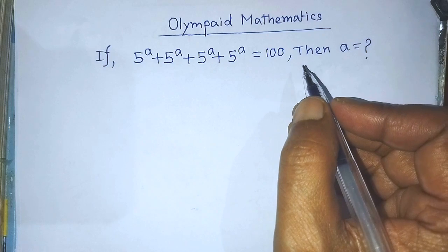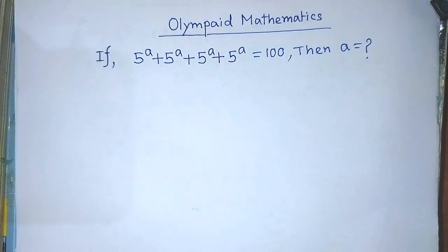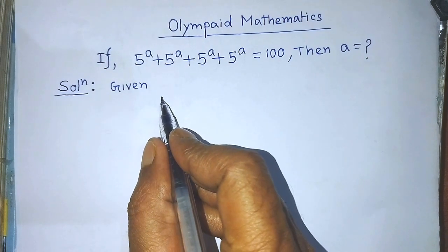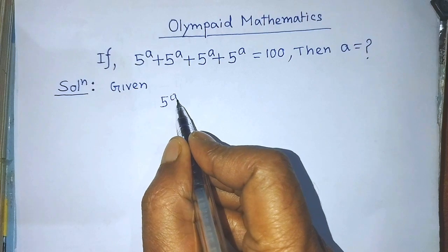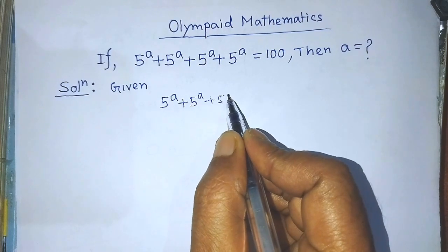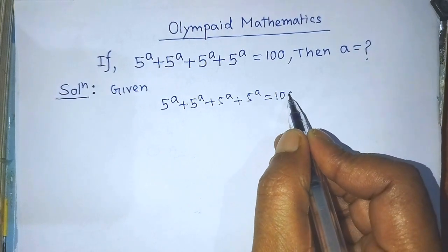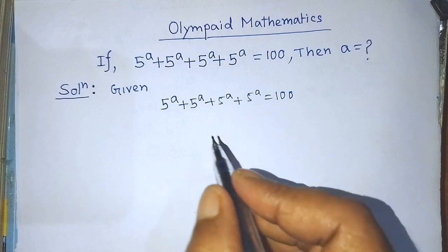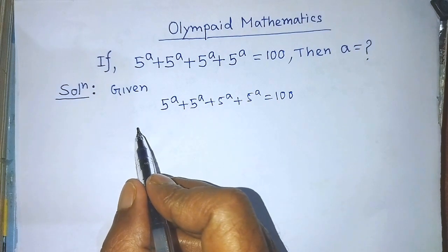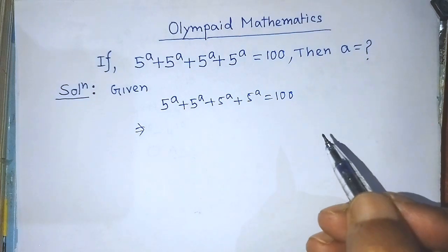Today in this video, I am telling you how to find the value of A from this equation. Our given algebraic equation is: 5 to the power A plus 5 to the power A plus 5 to the power A plus 5 to the power A is equal to 100. On the left hand side of this equation, there are 4 terms of 5 to the power A. So now we can take 5 to the power A common from the 4 terms on the left hand side of this equation.